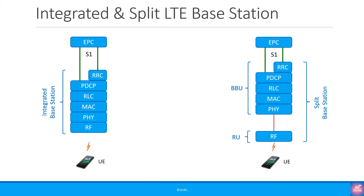We can see an integrated and split base station here. In the case of integrated units, all the layers and RRU are part of the same package — this is often the case in small cell architecture where everything is integrated in a single package. Before I forget, the connection between the RRH and the core is called backhaul, and the connection between BBU and RRU is known as the fronthaul.